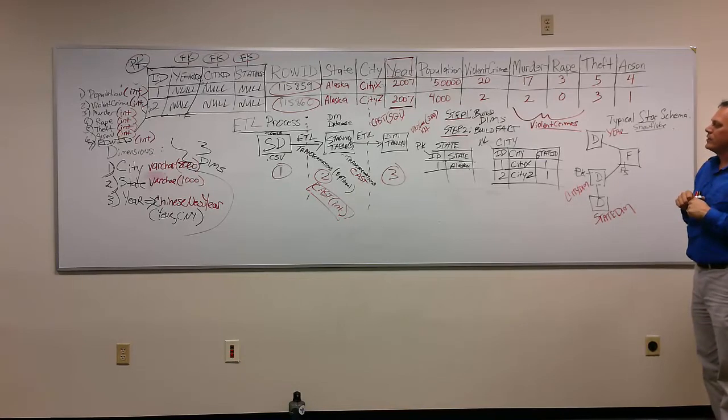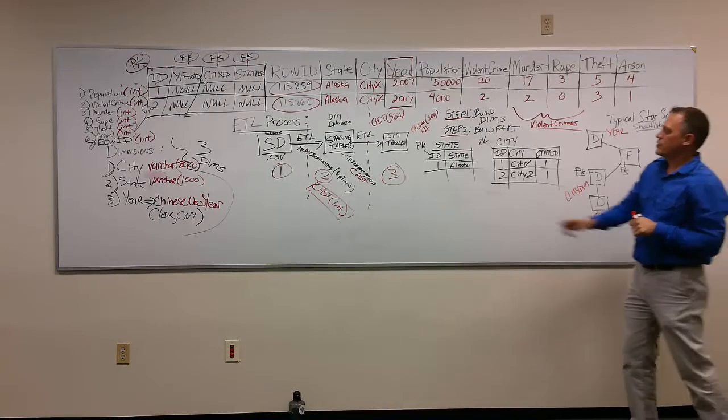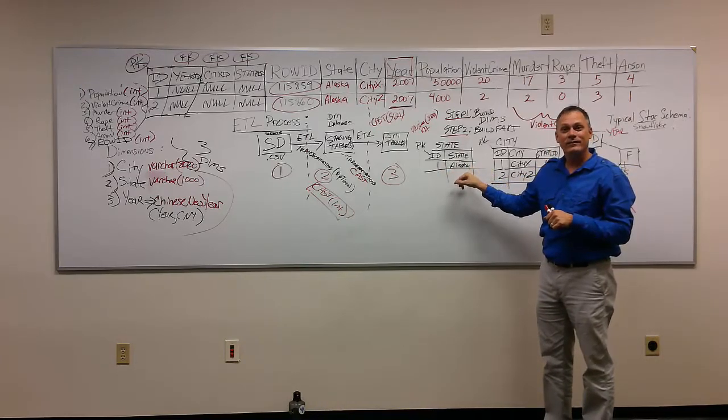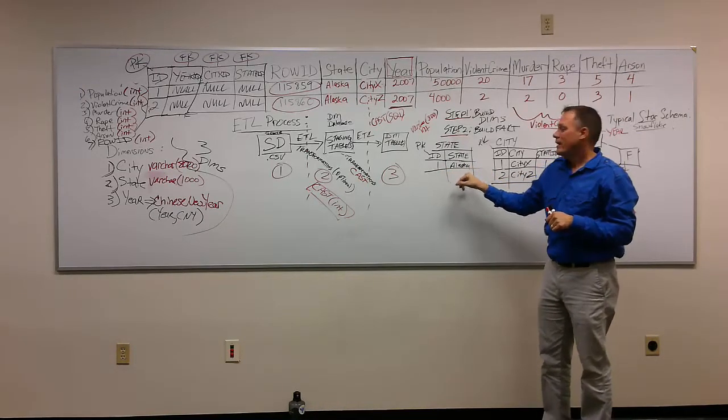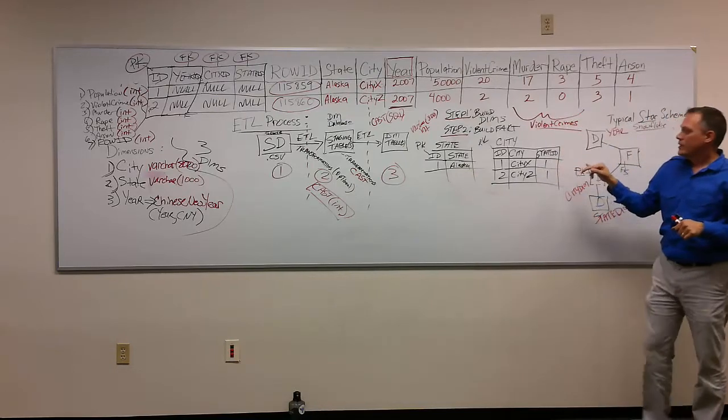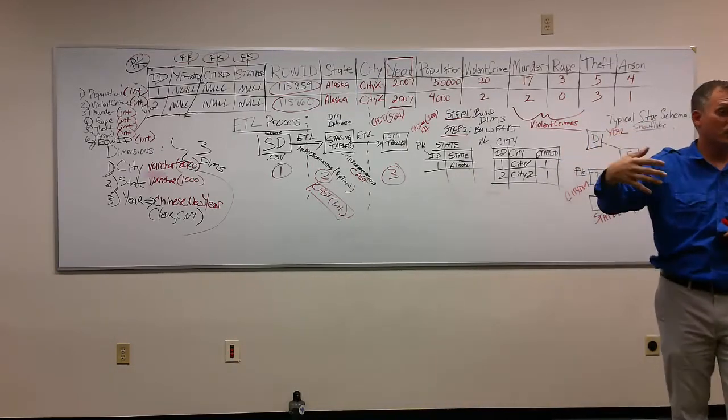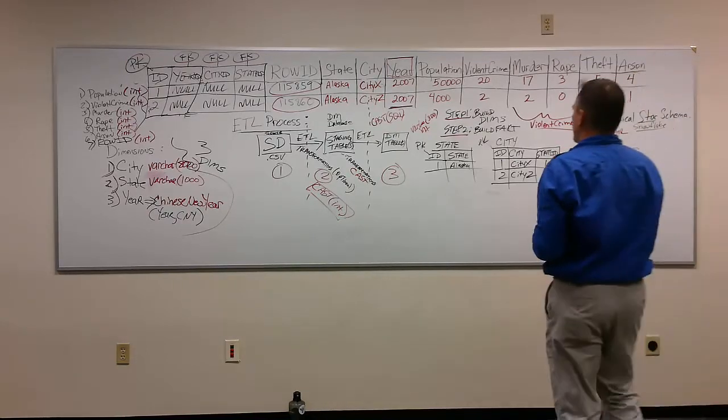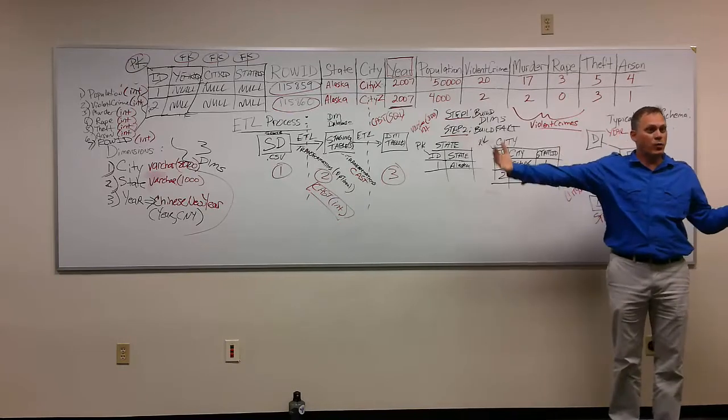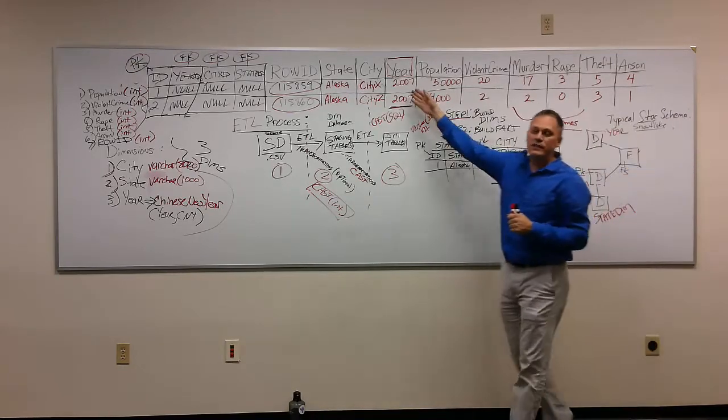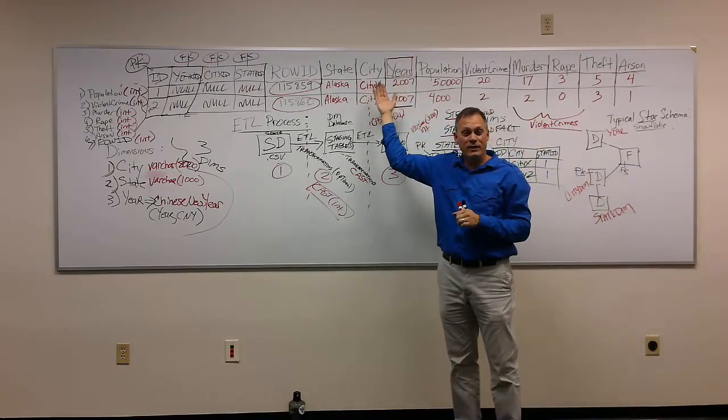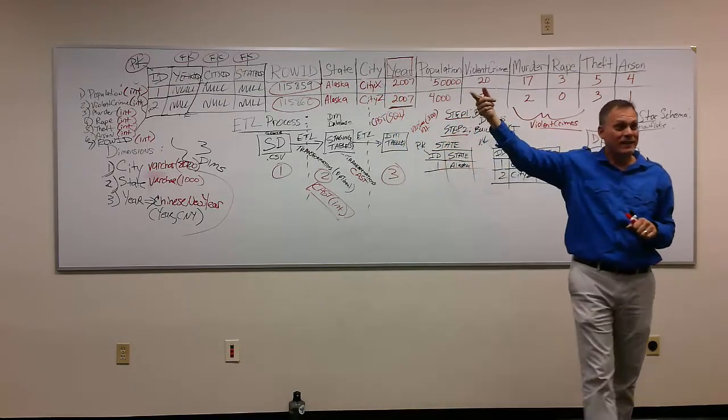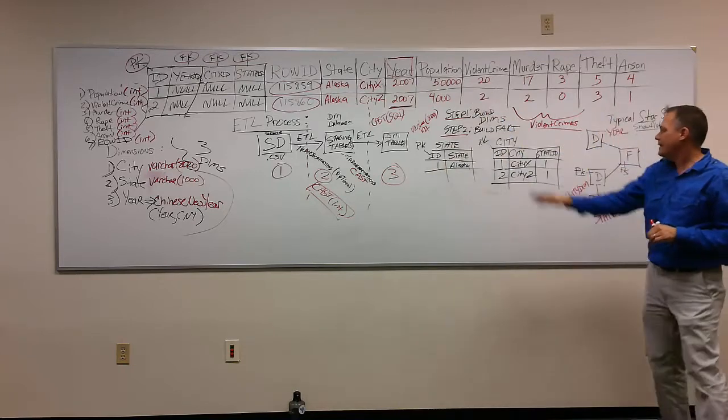Now, from that distinct list, we would have to determine what ID is associated with that state. And from that, you'll see this next week in SQL code. We're not going to focus on the SQL code tonight. But if you could just imagine, you would end up constructing a SQL query that would get a distinct list of cities combined with the state. And from that, we would determine the ID associated with that state.